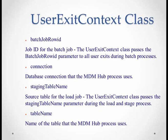The UserExitContext also provides a connection object to get a database connection to the MDM database, the staging table name, and the base object table name — for example, if you are running a load job on the party table, it returns the party table name. These are the different parameters returned by the UserExitContext. So far we have seen what a user exit is, the different processes where user exits are implemented, how many user exits exist per process, and the UserExitContext class which provides environment-related properties for custom code.